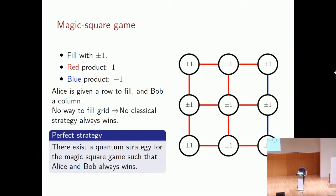This structure is what we use for black-box testing: we look at games where having a quantum state provides an advantage. If we observe a player always winning, or winning with higher probability than is classically possible, we can certify that they must have used some quantum approach to achieve that winning probability.